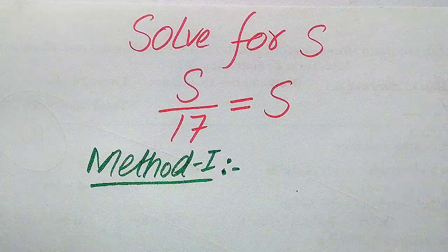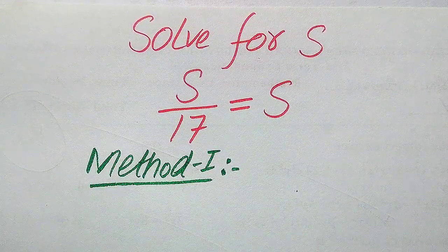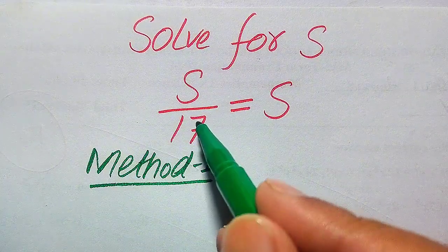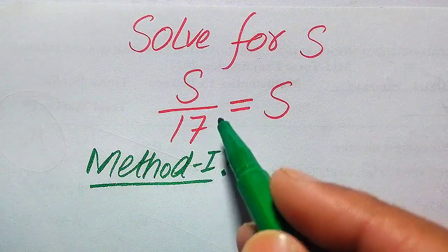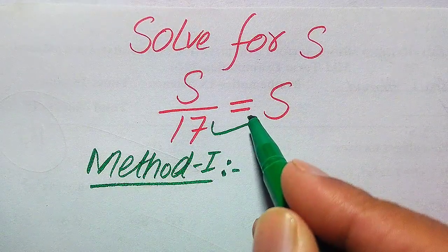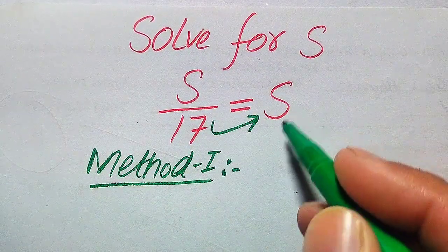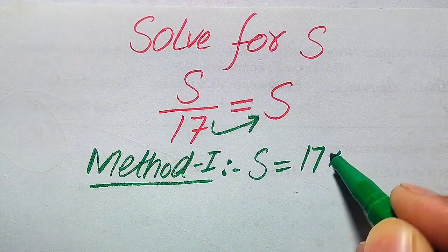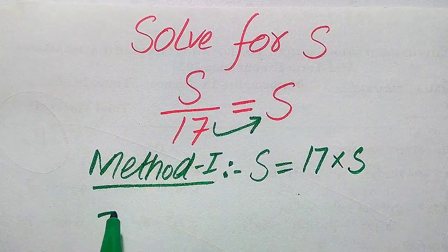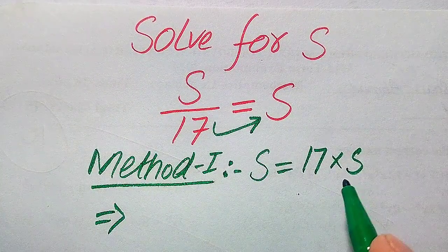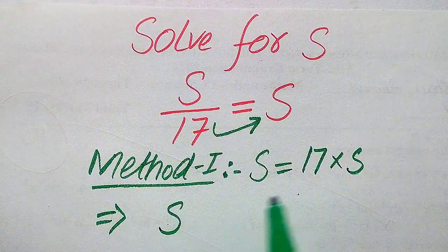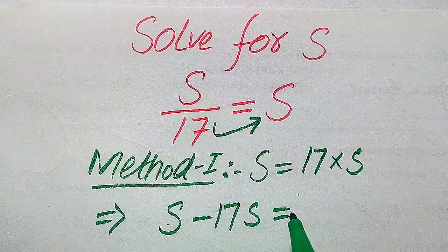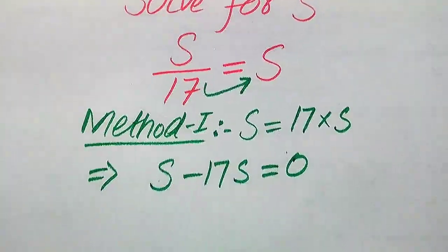If you have any other method in mind, please write it in the comment section. Now we move towards our first method. In the first method, the denominator of the left-hand side term is 17. We move this 17 to the right-hand side — where it was dividing, it becomes multiplying — so it becomes s = 17 × √s. We then move 17√s from the right-hand side to the left-hand side, where its positive value becomes negative: s − 17√s = 0.